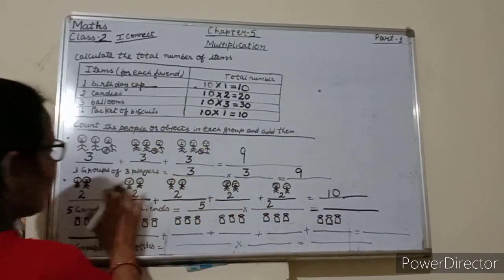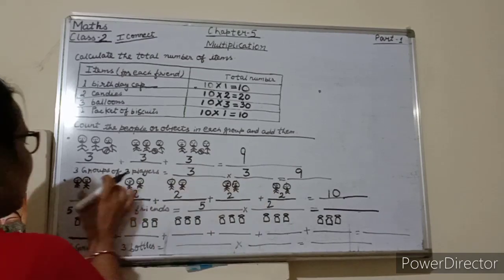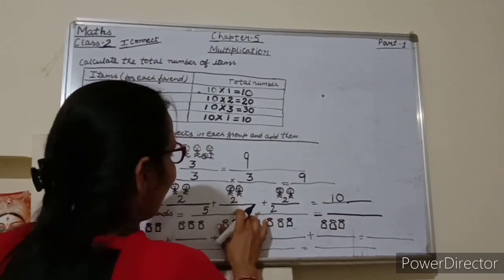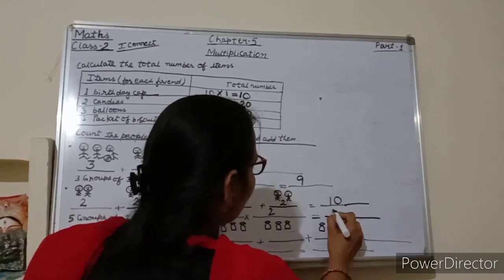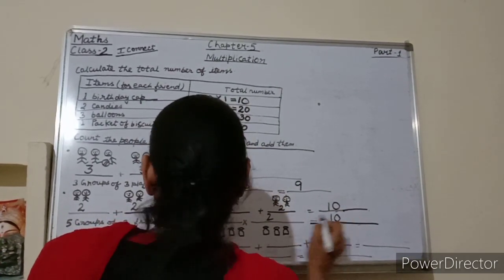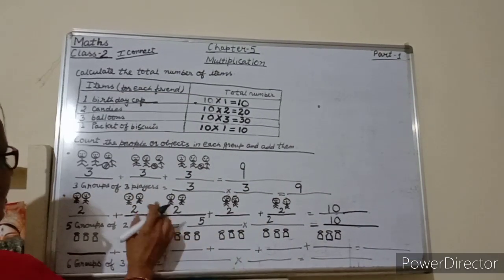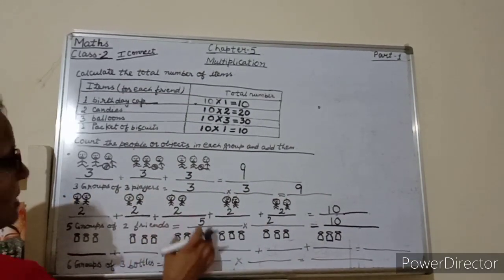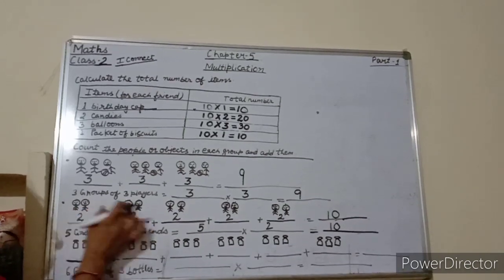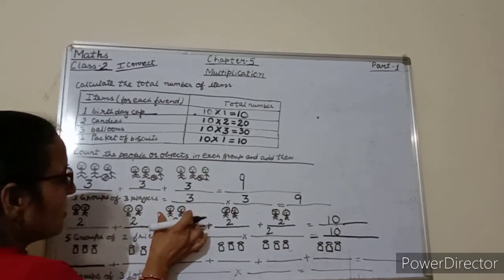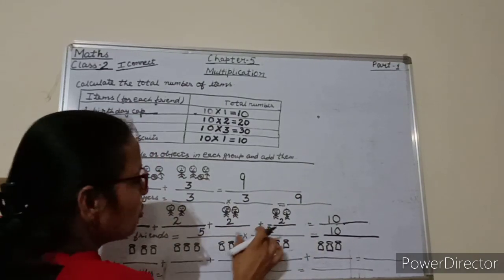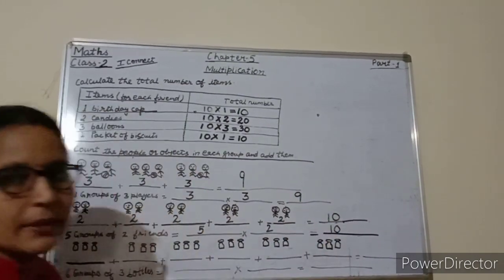5 groups are there, and in each group there are 2 friends, so 5 into 2. 5 twos are 10. So how many times 2? 5 times. 1 time, 2 times, 3 times, 4 times, 5 times — means 5 times 2 is equals to 10.